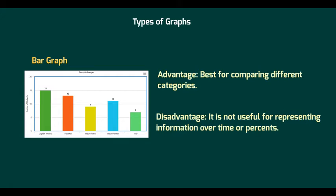The first type of graph here is a bar graph. If you look at the bar graph, it's got different categories. Here it's looking at what's the favorite Avenger. So the options we've got are Captain America, Iron Man, Black Widow, Black Panther, and Thor. We can see that this is comparing different categories.